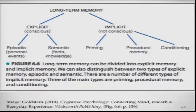This is basically what explicit and implicit memory mean. Explicit or conscious memory contains episodic memory and semantic memory, while implicit memory — which is not conscious and cannot be easily talked about — includes priming, procedural memory, and conditioning.